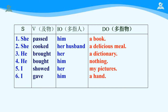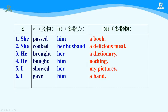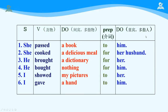现在我们可以观察到，这六句话都有一个共同的特点：宾语的部分同时又有人又有物。间接宾语的部分往往多指人，而直接宾语的部分则多指物。当间接承受者在动作的直接承受者之前时，介词往往被省略，我们直接把间接宾语放在直接宾语的前面即可。